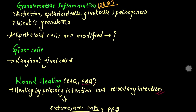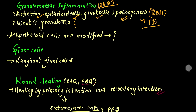In chronic inflammation, this is the definition of the epithelioid cell. The involvement of T cells is an important concept to understand in this topic.